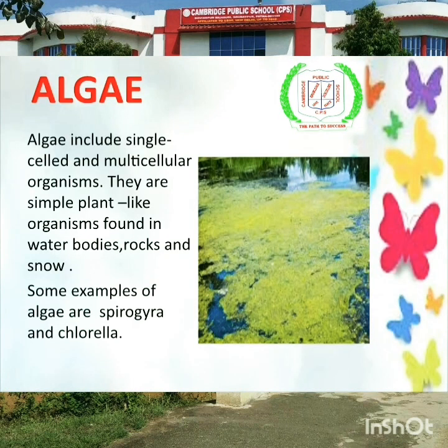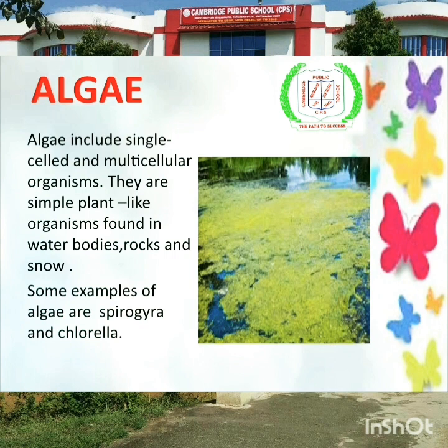Next, alga. Alga include single-celled and multicellular organisms. They are simple plant-like organisms found in water bodies, rocks and snow. Agar aap ki area mein koi talaab aagaira hoga, toh aap ne dekha hoga talaab ke paani mein is tarah ka layering rehta hai. Ye kai jati ka poudha hota hai jo kaafi smooth or slippery hota hai. Some examples of alga are Spirogyra and Chlorella.